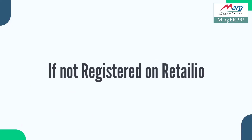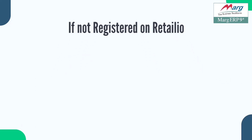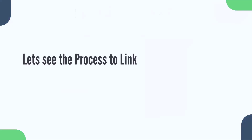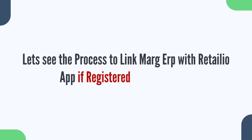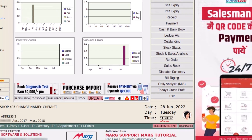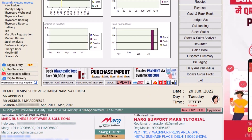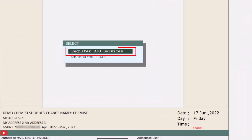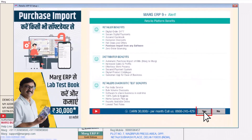If you are already registered on the Retail I.O. application and you want to link Marg ERP with Retail I.O., you will click on RIO services from the Marg ERP home screen, then click on Register RIO services, and do Yes.